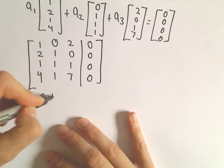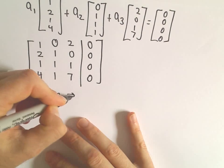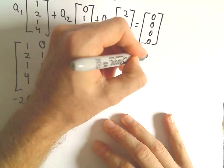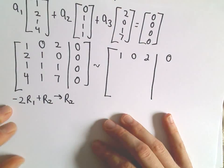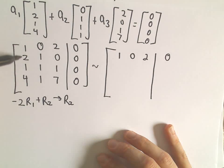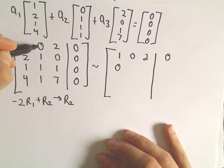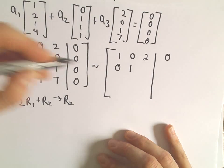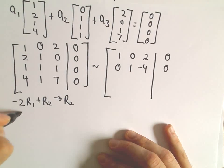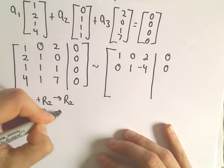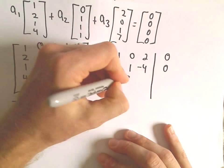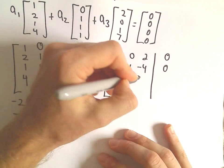So I'm going to do negative 2 times the first row and add that to the second row to get my new second row. This is the type of stuff that is very useful to have a calculator for, but you may have to do it by hand in class. So negative 2 times 1 plus 2 is 0. Negative 2 times 0 plus 1 is 1. Negative 2 times 2 plus 0 is negative 4. We'll just get 0 in the last column.